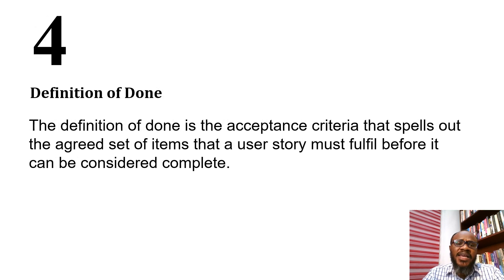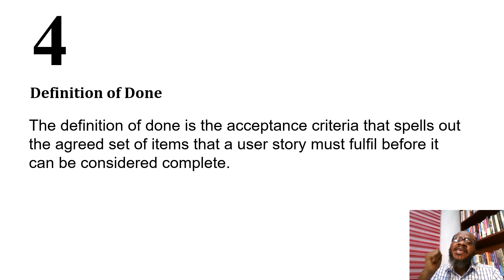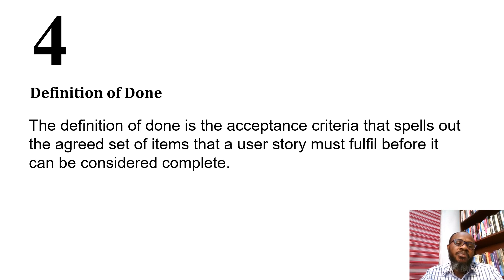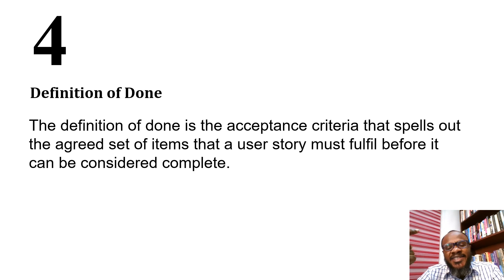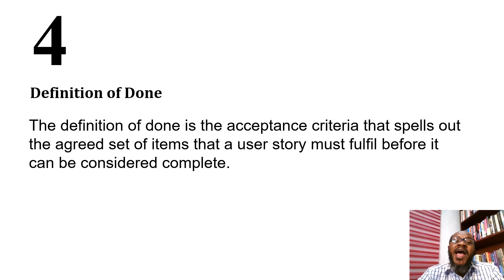The next item is definition of done — also a criteria. Definition of done is the acceptance criteria that spells out the agreed set of items a user story must fulfill before it can be considered complete. Developers need a guiding criteria as they work. Definition of done describes what done looks like — how the functionality must work before we say it's complete.